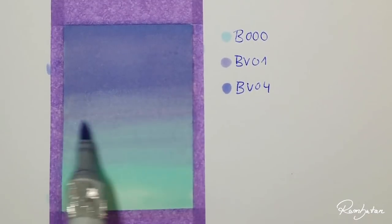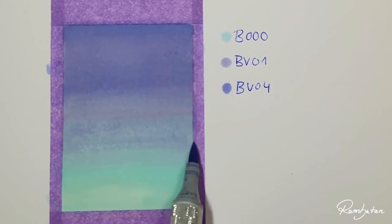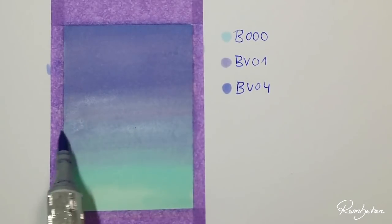You can blend the colors again with BV01 so the background looks gently shaded from above to the bottom.